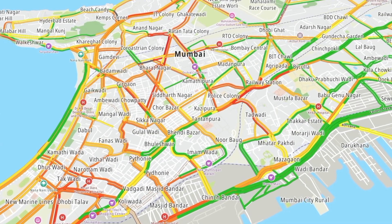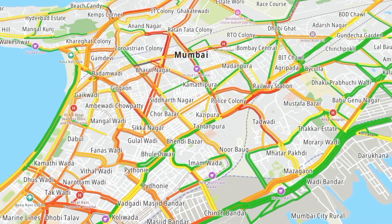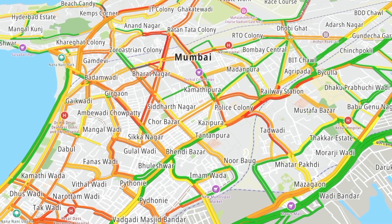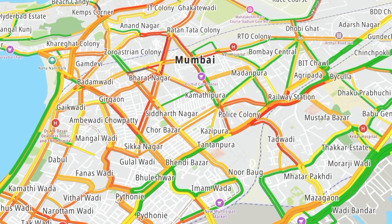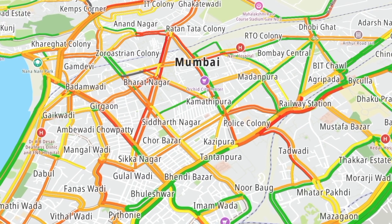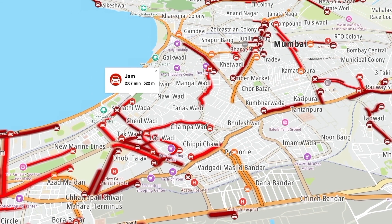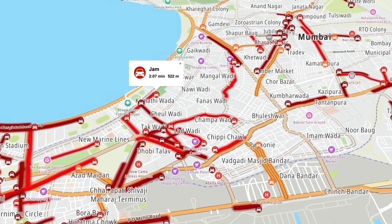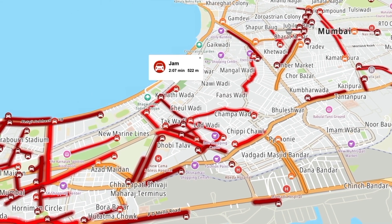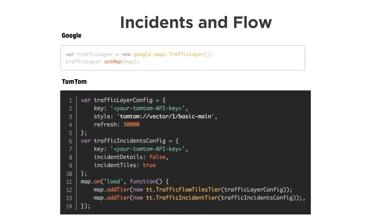When we mention traffic, we have to make a distinction between incidents and traffic flow. The incidents are a representation of events that are happening on the road right now, and the flow is how fast or how slow traffic is flowing in different road segments. For that reason, we have two representations here: one is to present the flow tile layer, and the other is to present the incidents layer. Each one has its own configuration.